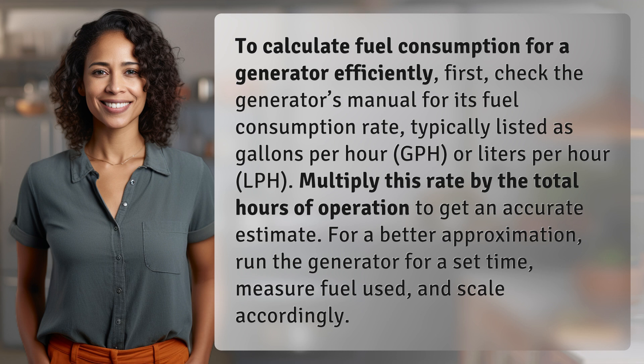Multiply this rate by the total hours of operation to get an accurate estimate. For a better approximation, run the generator for a set time, measure the fuel used, and scale accordingly.